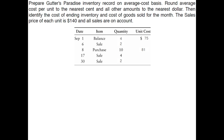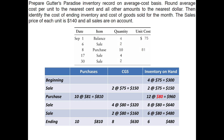You should have found ending inventory of six items at $480. Cost of goods sold: you sold eight items at a total of $630. And for purchases, you purchased 10 items at $810.